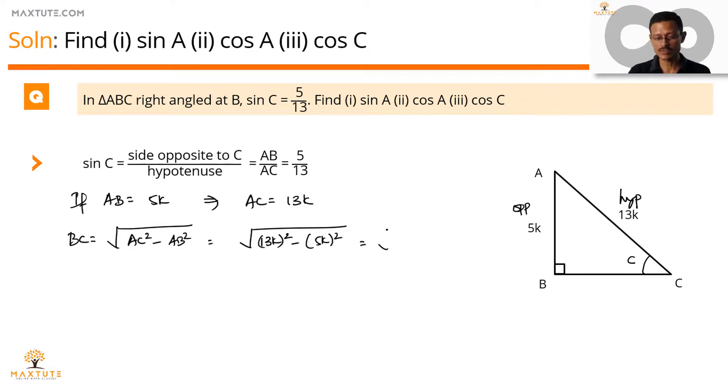13 square is 169. So this is going to be under root of 169k square minus 5 square is equal to 25. So 25k square. This is equal to 169 minus 25 is 144 under root 144k square which is equal to 12k. So we found out the measure of the third side.